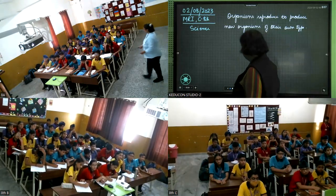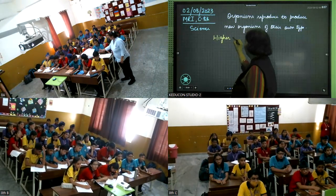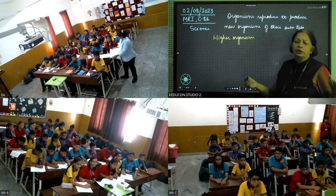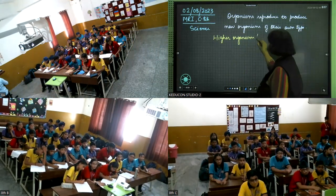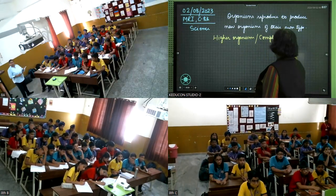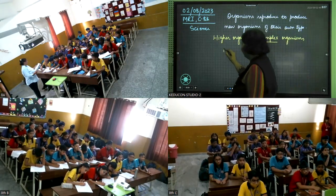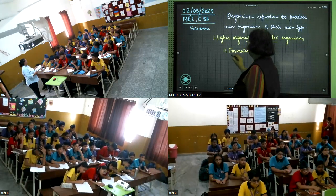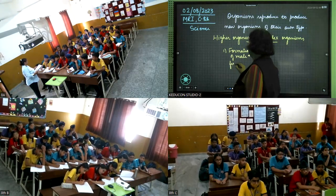So what occurs in higher organisms — or complex organisms? Jo evolution mein baad mein aaye, those are higher organisms. In these, the first step is the formation of male and female gametes.